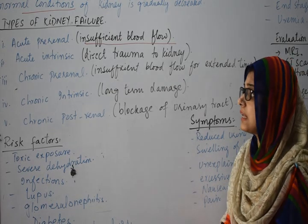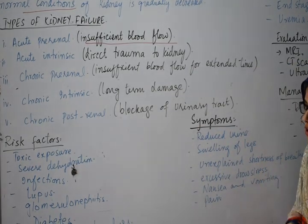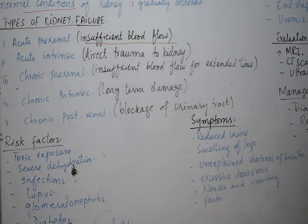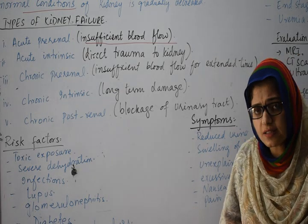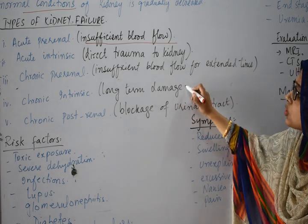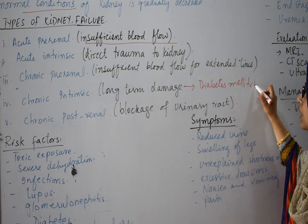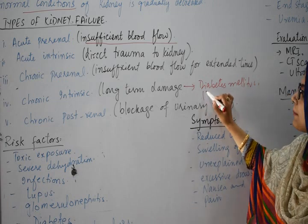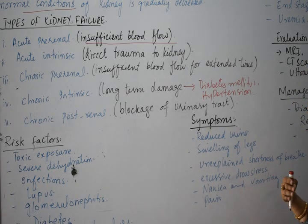We also have chronic pre-renal: if there is insufficient blood flow for a longer time and it is not reversed, the kidney will be damaged as chronic pre-renal. Then we have chronic intrinsic — long-term damage. Chronic intrinsic damage is due to decreased insulin production or hypertension — elevated blood pressure. These two conditions gradually cause kidney loss.